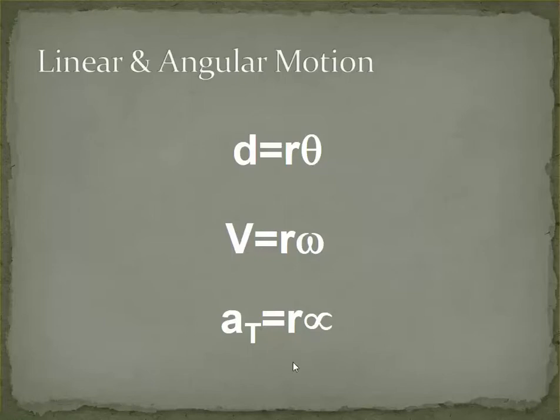And it also is true for acceleration. So linear acceleration is equal to the radius times alpha or angular acceleration.